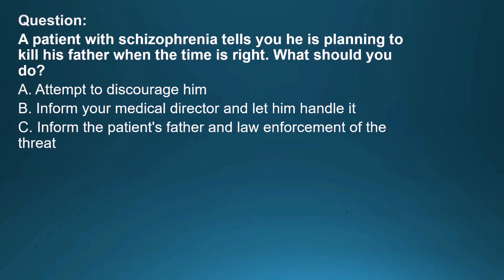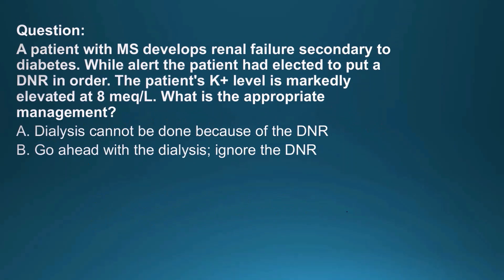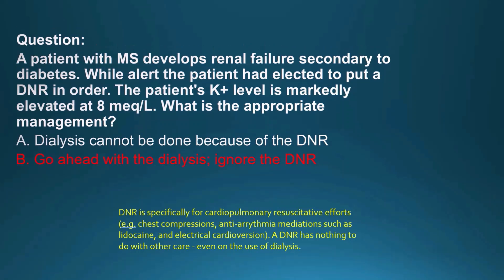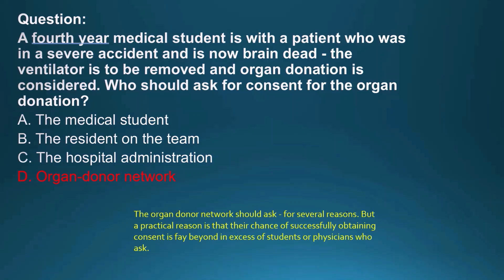A patient with schizophrenia tells you he is planning to kill his father when the time is right. What should you do? Inform the father and law enforcement of the threat — safety overrides confidentiality. A patient with MS develops renal failure secondary to diabetes and has a DNR in place; the potassium level is markedly elevated. What is appropriate management? Go ahead with dialysis — ignore the DNR. DNR is specifically for cardiopulmonary resuscitative efforts. Regarding organ donation for a brain-dead patient: the organ donor network should ask for consent, as their success rate is far beyond that of students or physicians.